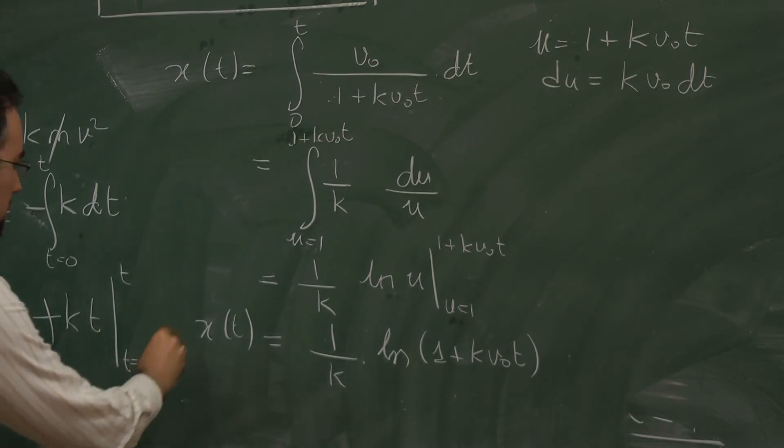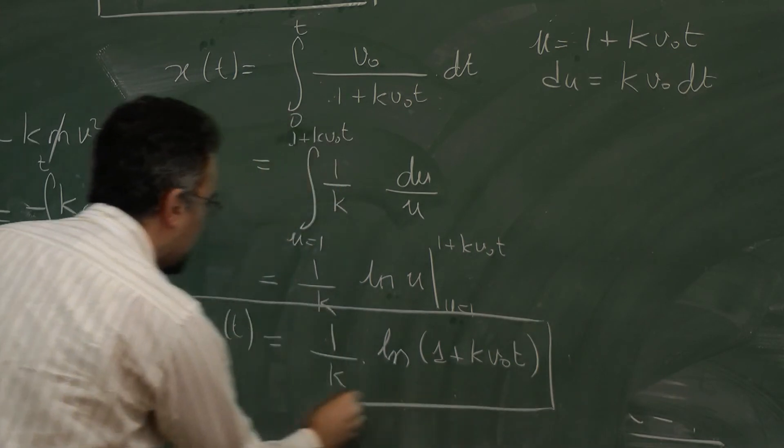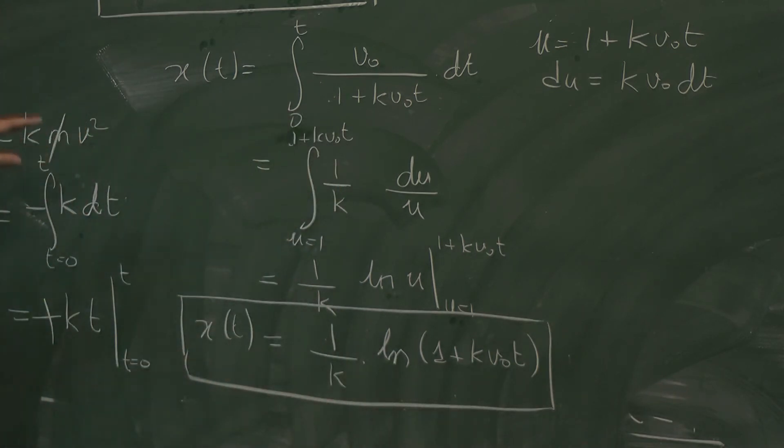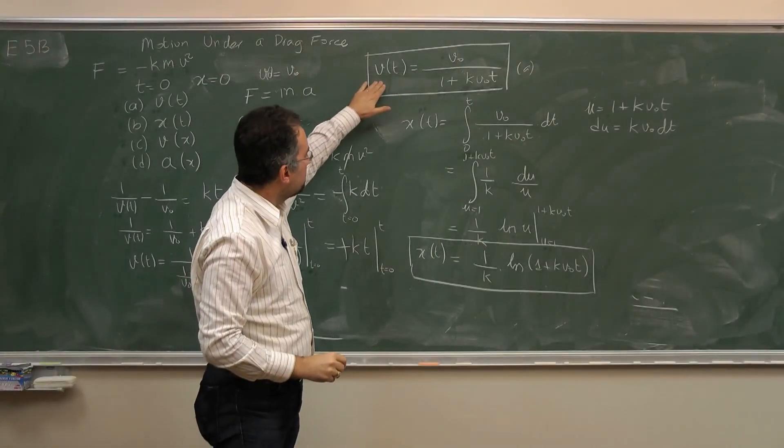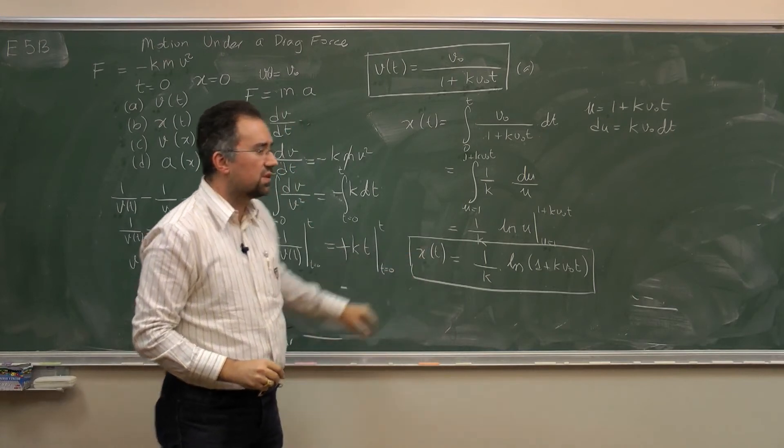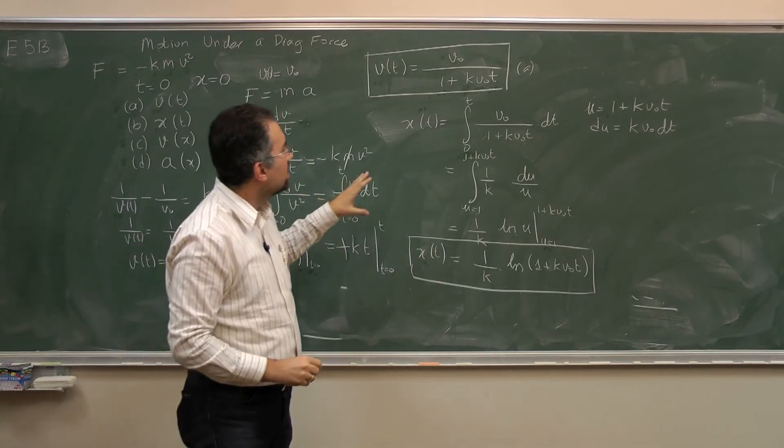This is position as a function of time. Now this is the answer to your part b. Now at this point, we have found the speed as a function of time and the position as a function of time.